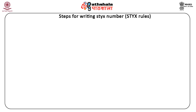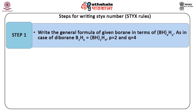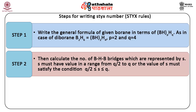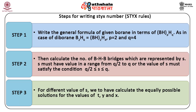Now we will learn about the rules to determine the STYX code for boranes. Step 1: Write the general formula of the given borane as (BH)P·HQ so that the values of P and Q can be fixed. For diborane, P equals 2 and Q equals 4. Step 2: Calculate the number of boron-hydrogen-boron bridges represented by S. S must have a value in the range Q/2 to Q, i.e., Q/2 ≤ S ≤ Q. Step 3: For different values of S obtained in step 2, calculate the equally possible solutions for T, Y, and X — collectively called the STYX number.